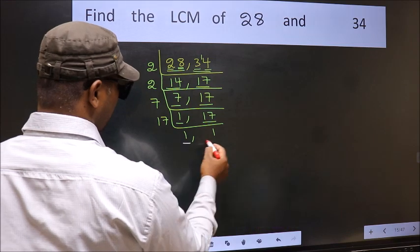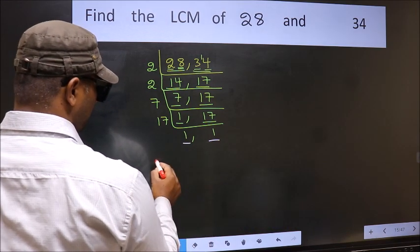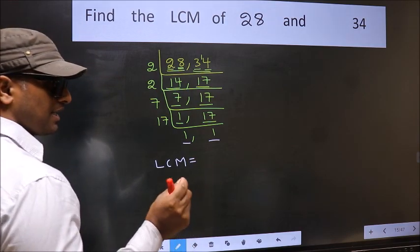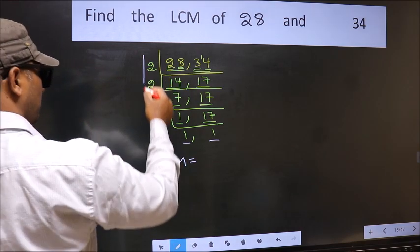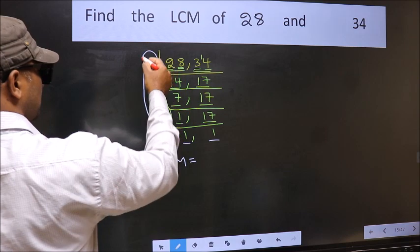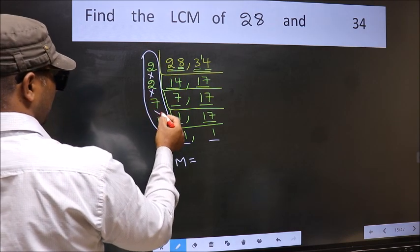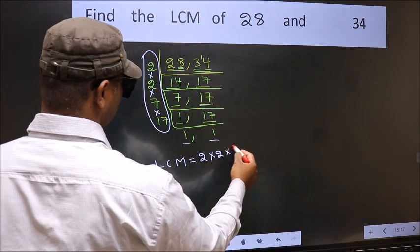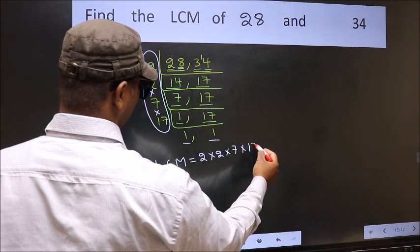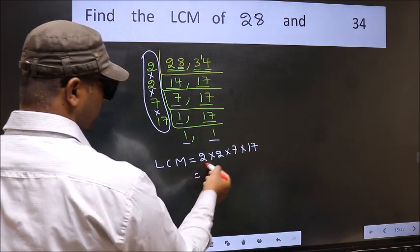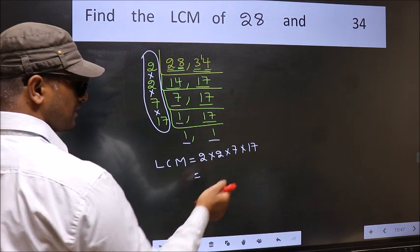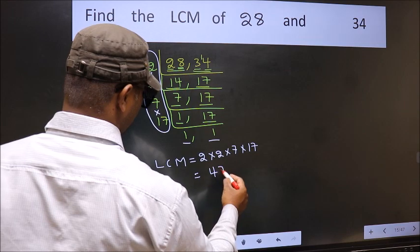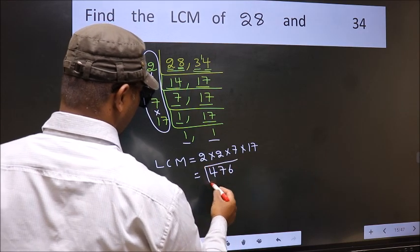So we got 1 in both places. Our LCM is the product of these numbers. That is 2 times 2 times 7 times 17. When we multiply these numbers, we get 476 as our LCM.